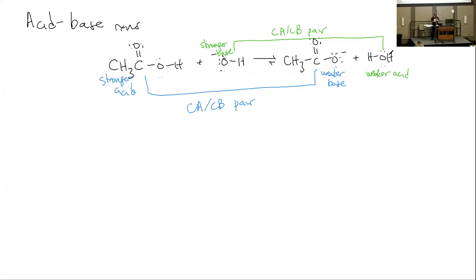How would you use curved arrow notation to show this reaction occurring? This is definitely not bogus. With curved arrows, we have one rule: they're always going to start where the electron pair starts, since we're using them to show movement of electrons. That's what a chemical reaction is — movement of electrons. They start where the electrons start and end where the electrons end.